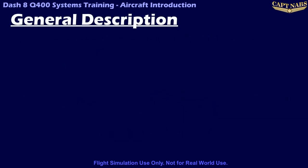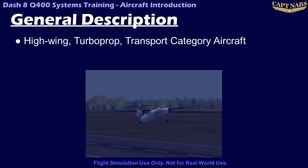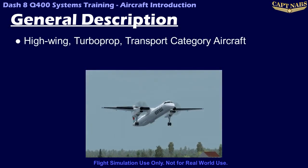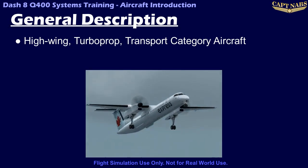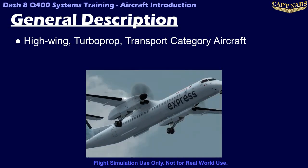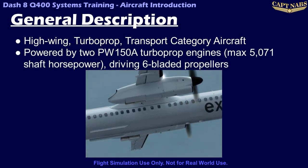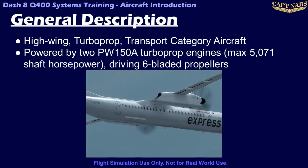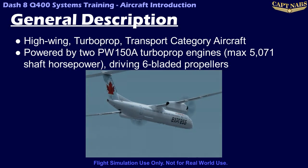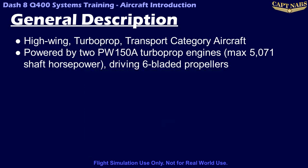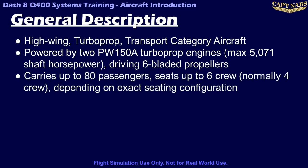The Dash 8 Q400 aircraft is a high-wing twin turboprop transport category aircraft manufactured by Bombardier Aerospace. It is the fourth and newest iteration of the de Havilland Dash 8 series. The Q400 is powered by two Pratt & Whitney PW150A turboprop engines, each capable of producing up to 5,071 shaft horsepower, each driving a six-bladed propeller. The aircraft can carry up to 80 passengers and up to six crew, depending on the seating configuration. Normally the aircraft carries a crew of four: two pilots and two flight attendants.